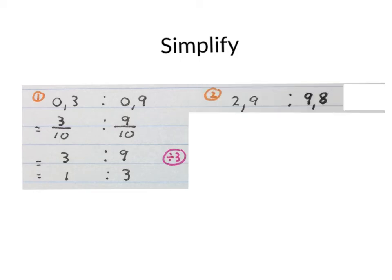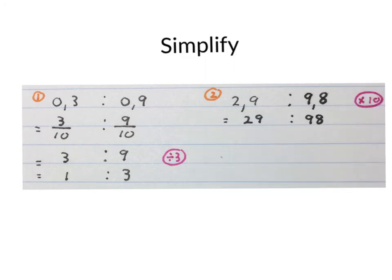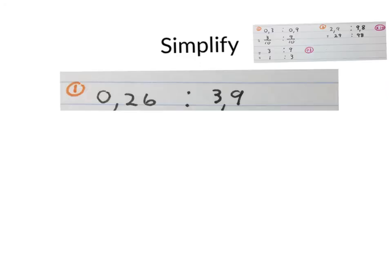We can also do it differently. Let's take 2.9 to 9.8. You may times both of these numbers by 10 and you get 29 to 98. And that is your simplified ratio because it cannot simplify any further. Because 29 is a prime number and only 1 and 29 can divide into 29.